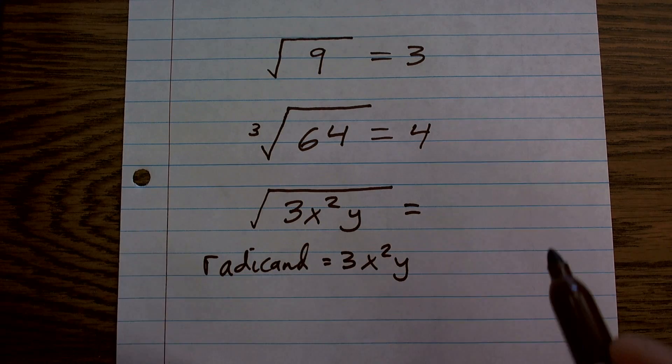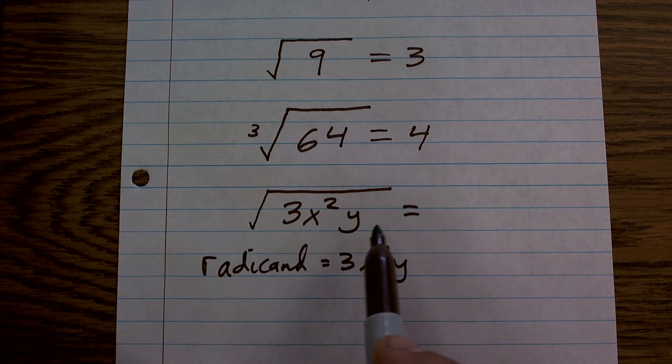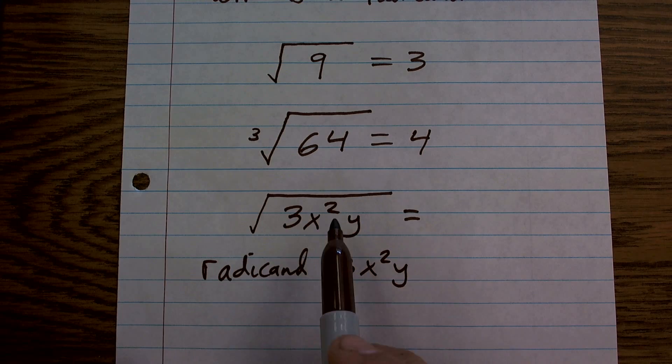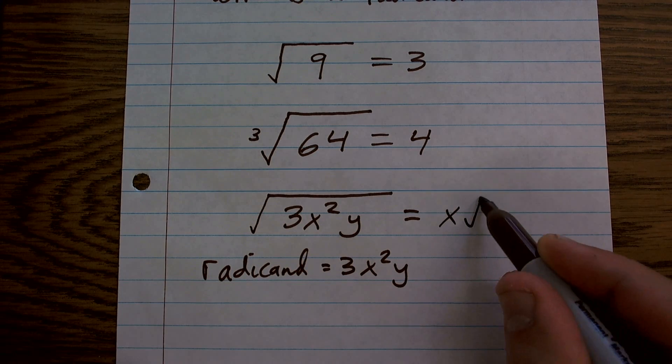Now, to solve this, for those of you that are kind of curious, I can't take the square root of 3, nor can I take the square root of y, but the square root of x squared is x, giving you x times the square root of 3y.